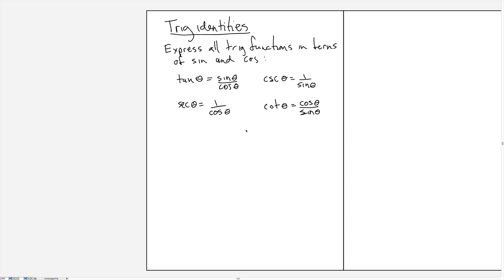The first trig identities are not really identities — they're more definitions. I usually think in terms of doing calculus on the trig functions sine and cosine of theta, but often you'll be given problems that involve tangent, cosecant, secant, or cotangent. I prefer not to remember derivatives or other identities for each of these separately, but instead to think of them as all being defined by sine and cosine.